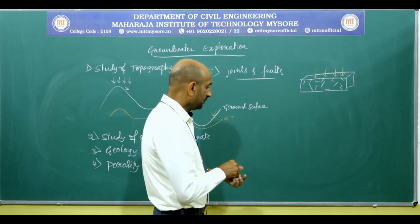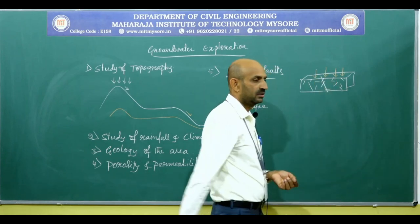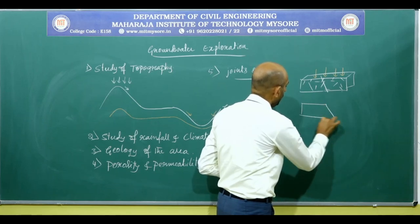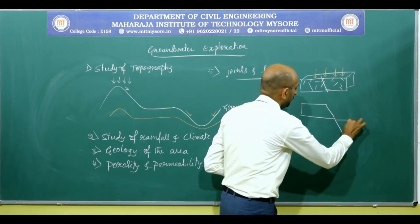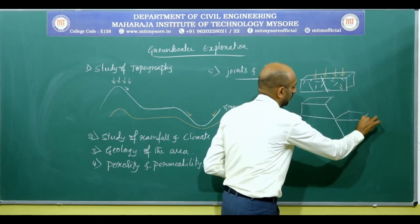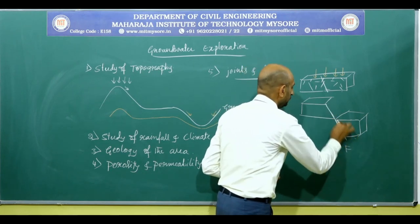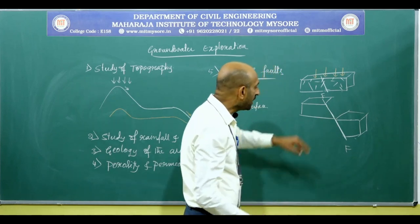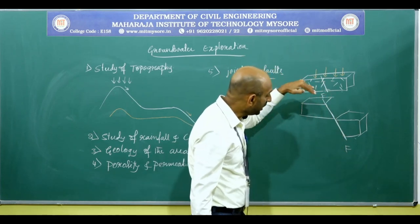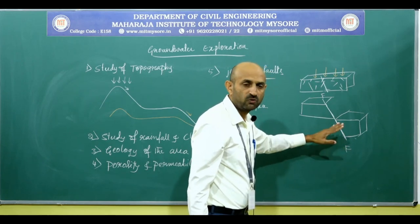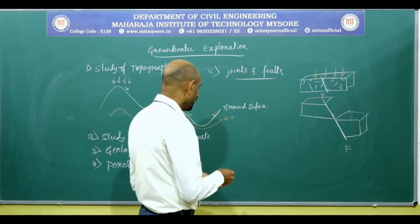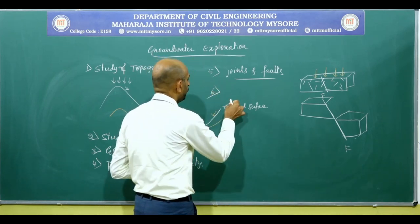When the same rock mass is subjected to faulting, one block moves upward and another moves downward, creating a fault plane. When precipitation takes place on that terrain, through this fault plane and gap, water enters into the ground and then moves towards the groundwater table.